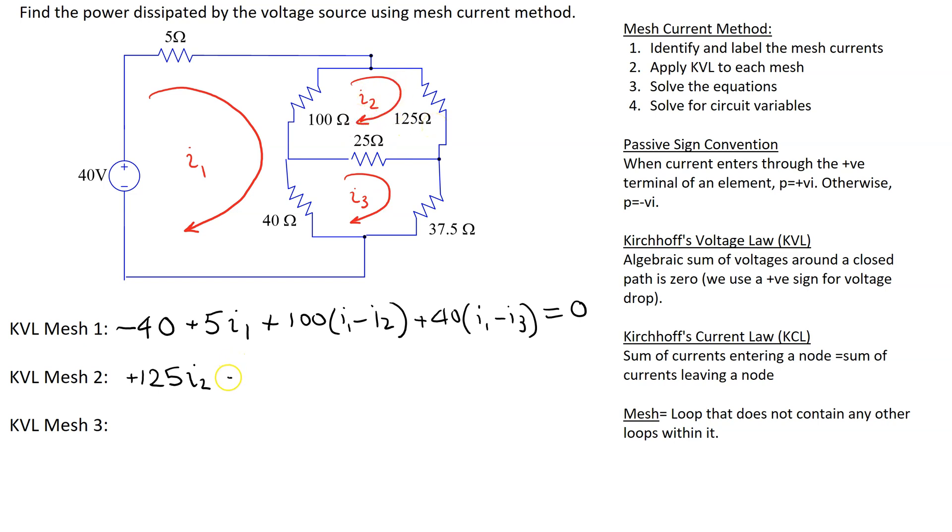So this means plus 25 times I2 minus I3, and then through the 100 ohm resistor two mesh currents. So we get plus 100 times I2 minus I1 equals zero.